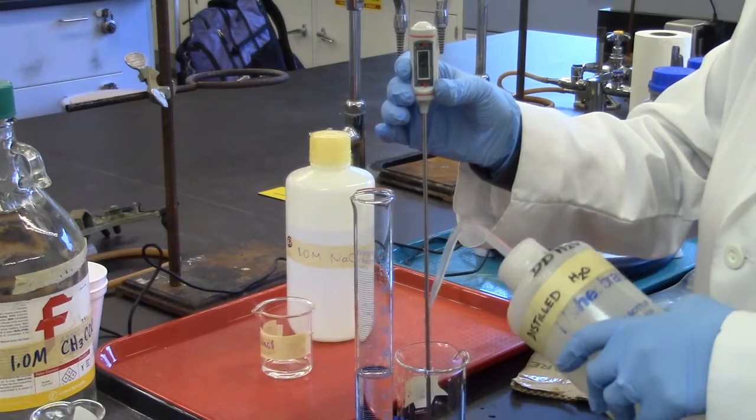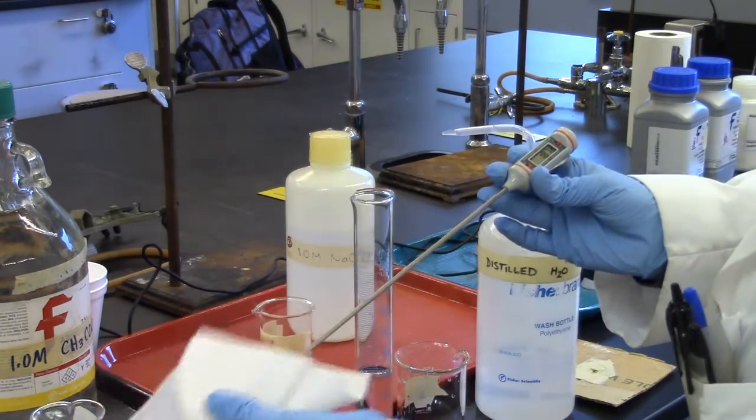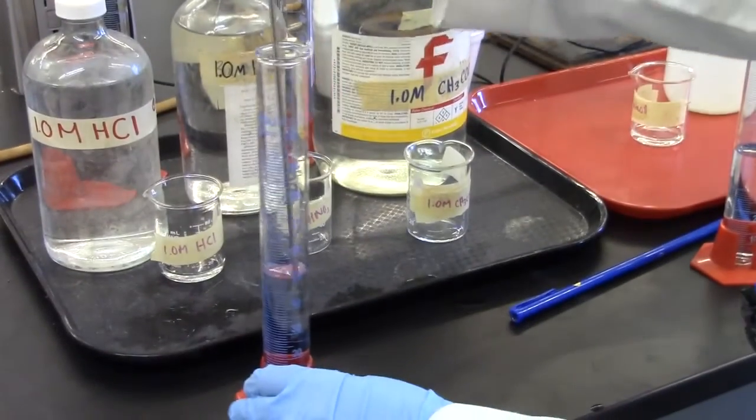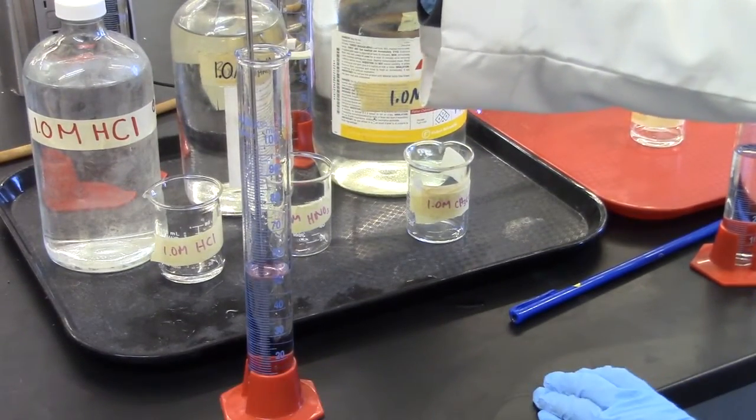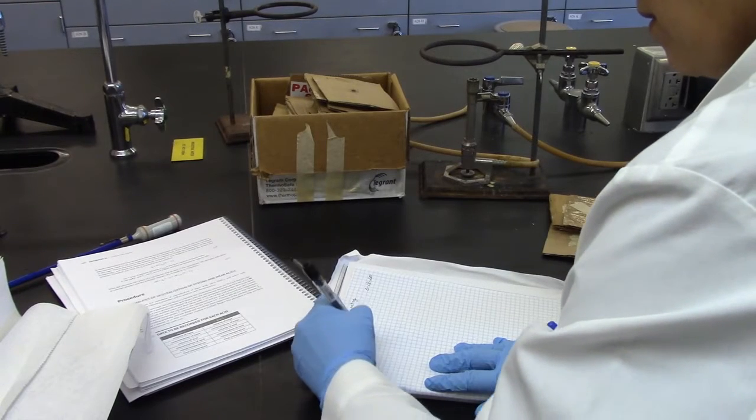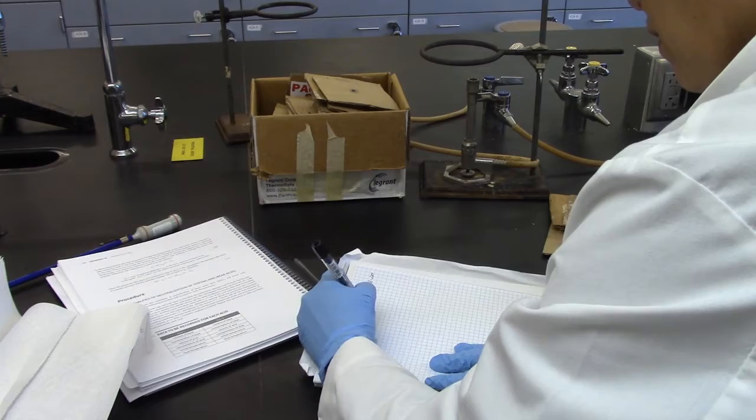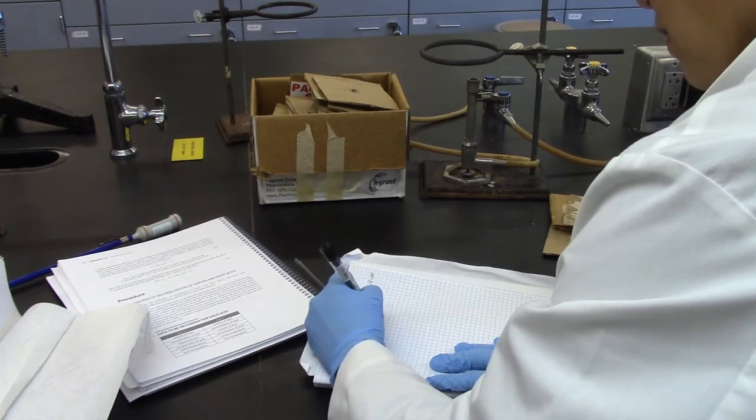Rinse the thermometer off with distilled water and pat it dry with a paper towel. Next, measure the temperature of the hydrochloric acid. Record the temperatures of the sodium hydroxide solution and the hydrochloric acid solution.